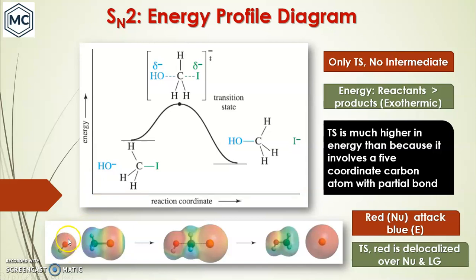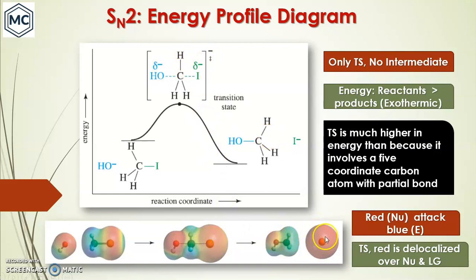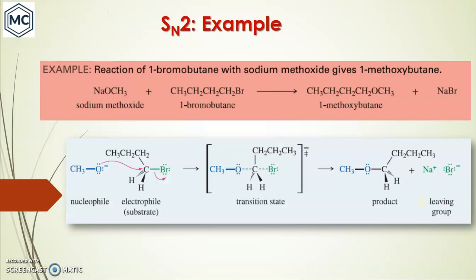Here you can see the electrostatic potential diagram. The red area has high electron density — the nucleophile — and it attacks the low electron density blue area of the electrophile. In the transition state both ends are red (negatively charged), and you can see the charge is delocalized over both the nucleophile and the leaving group.